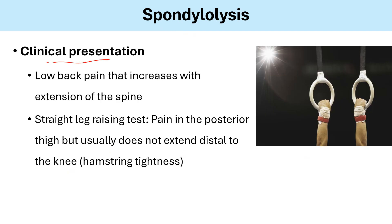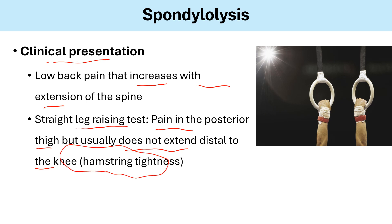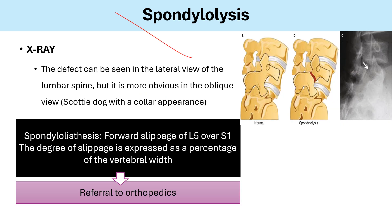Clinical presentation: low back pain that increases with extension — the key word is extension of the spine. A straight leg raising test shows pain in the posterior thigh that doesn't extend below the knee, known as hamstring tightness. The best study is plain x-ray of the back with lateral and oblique views, showing the normal Scotty dog appearance. The stress fracture appears as a collar on the dog — the Scotty dog with a collar appearance, visible on x-ray.